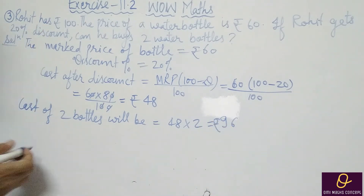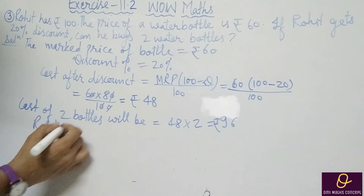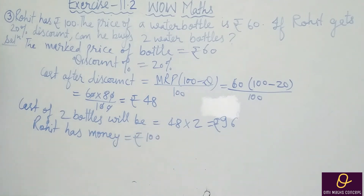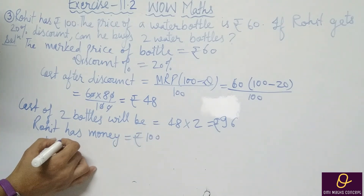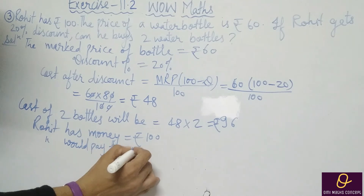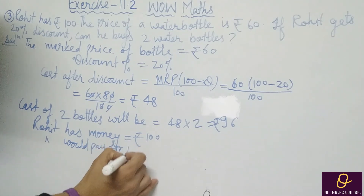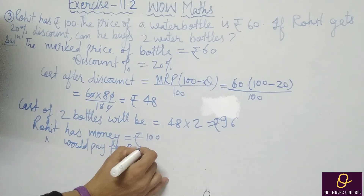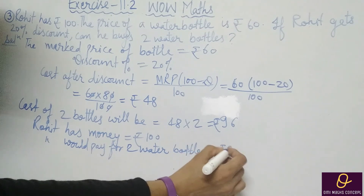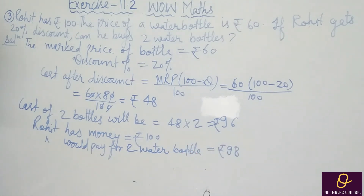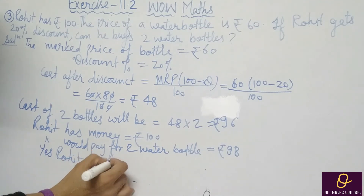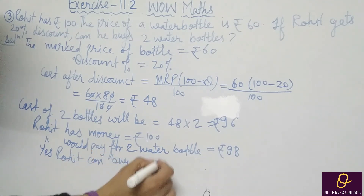Rohit has Rs. 100, and he would pay Rs. 96 for 2 water bottles. Since 96 is less than 100, yes, Rohit can buy 2 water bottles.